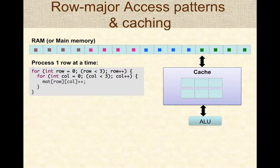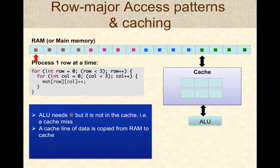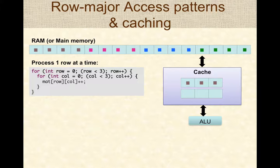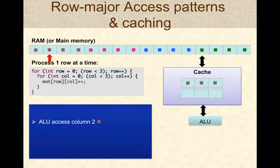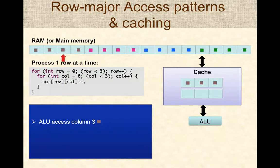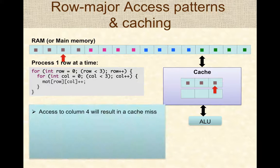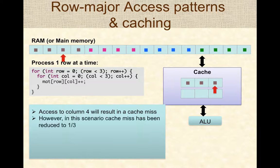Now consider alternative code where the for loops for row and column are switched, giving a row-major access pattern. The first access is a cache miss and the block must be copied from memory into cache. But when we access the second column in the first row, that block is already in cache — a cache hit — and the ALU can immediately use it. Similarly, the third column is also a cache hit. The fourth column results in a cache miss, but we have already reduced cache misses by a third, significantly improving performance.